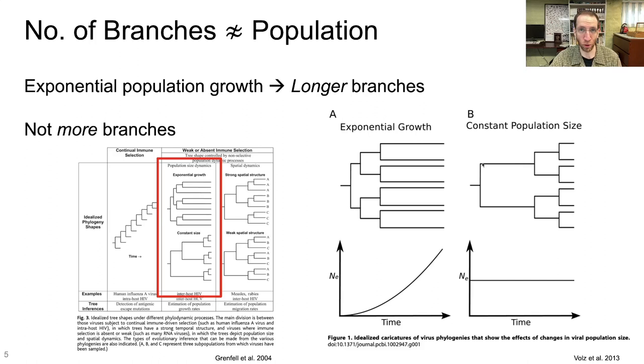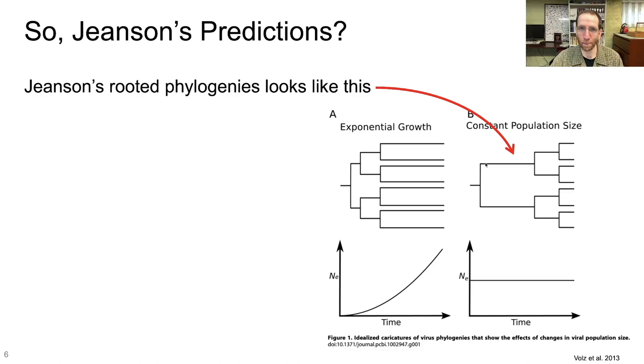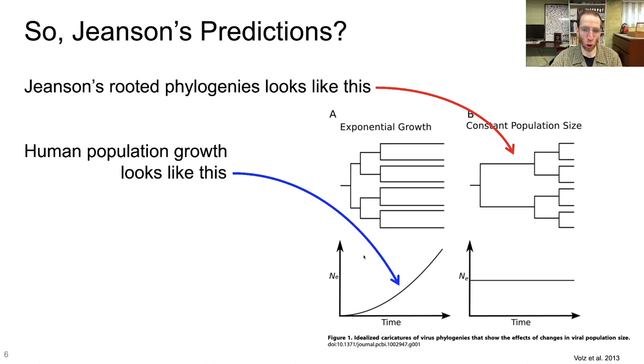So what about Jeanssen's predictions? How are they looking? Well, Jeanssen's rooted phylogenies look like this, right? They look like this where you have an exponentially increasing number of branches. But human population growth looks like this, right? The recent history of human population growth, as Jeanssen says, looks like a hockey stick. It's an exponentially increasing curve. Do they match? Do Jeanssen's predictions of population based on his phylogeny match what the population growth actually looks like?